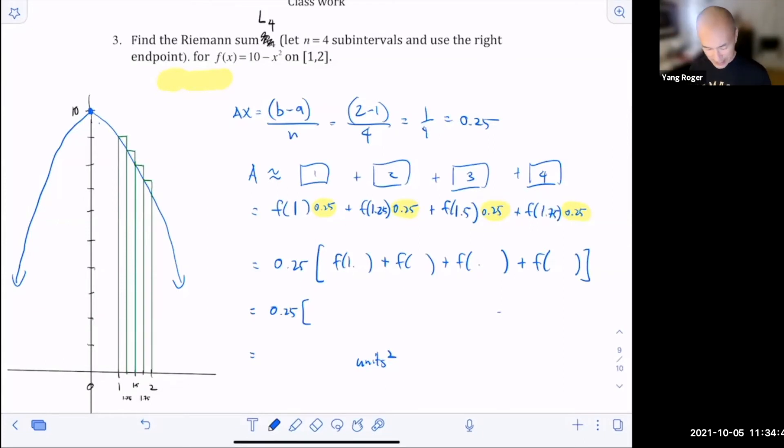So we factor that out. That's going to give you a 1, 1.25, 1.5, and 1.75 like that, right? Now we just got to pop each of those numbers into the function. So this will be 10 minus 1 squared plus 10 minus 1.25 squared plus 10 minus 1.5 squared